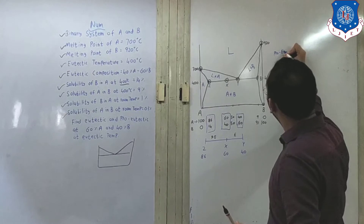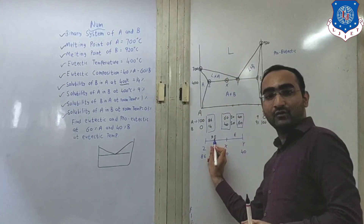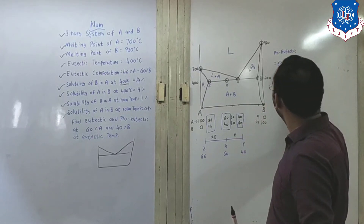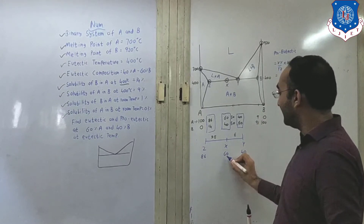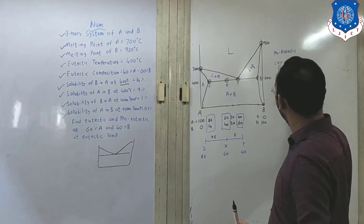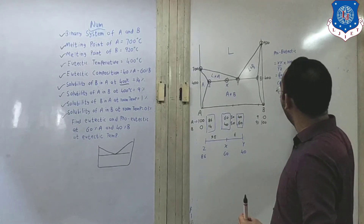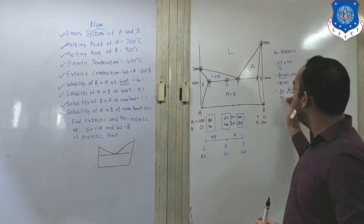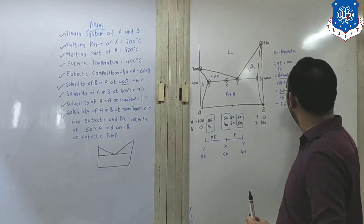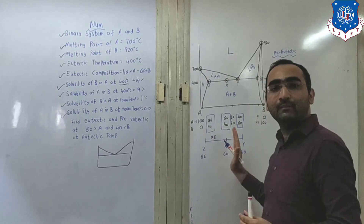Now let us find out how to find this thing with the help of the lever rule. For the pro-eutectic, as I told you in the last lecture, we apply the lever rule using the opposite end. Pro-eutectic is over here, so we take the opposite part. That is XY = XY divided by YZ, multiplied by 100. What is XY? XY is nothing but 60 minus 40. Divided by total YZ, that is 86 minus 40, multiplied by 100. What does it come to? That is 20 divided by 46, multiplied by 100. The result is around 56.52 percent. So we have calculated the pro-eutectic using cross multiplication.